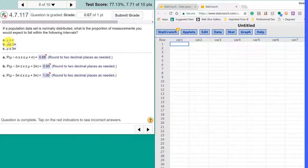And they give us mu plus or minus sigma, mu plus or minus 2 sigma, mu plus or minus 3 sigma. We can do this very quickly using StatCrunch.